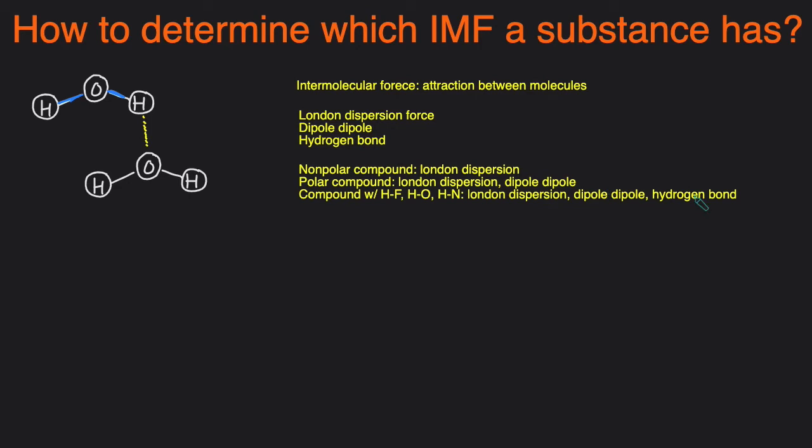So let's take a look at some example problems and apply these rules. In this problem, we have to determine what IMFs are present in the following substances. The first substance is carbon dioxide. To do this, we first have to determine if the compound is polar or nonpolar. And to do that, you have to draw the Lewis structure. So I'm just going to draw the Lewis structure to save time. But if you're having trouble drawing Lewis structures, check out the video in my description below where I go over that in detail. The Lewis structure for carbon dioxide looks like this: C with double bond, and then each of the O's have two lone pairs.